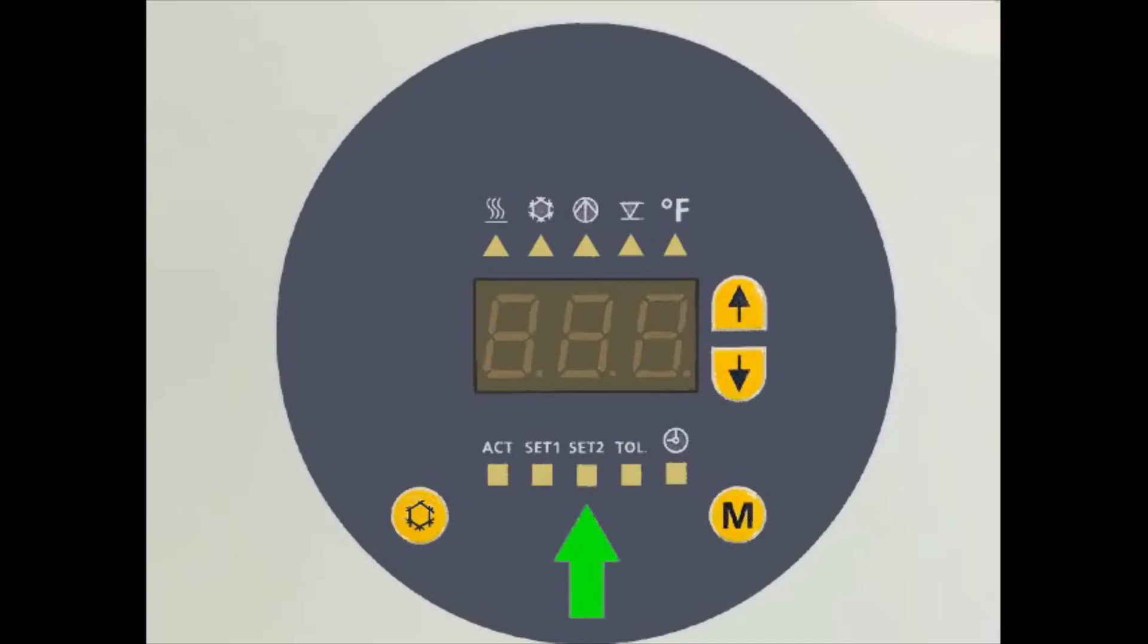Next we have the set two or cool down temperature LED indicator. Set two will flash when the snowflake button is pressed and stay illuminated when the set temperature is reached. After hitting the mode key to show the set two temperature set point, the set point can be adjusted using the up and down arrows.